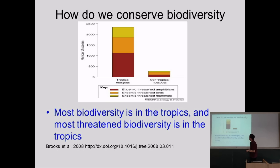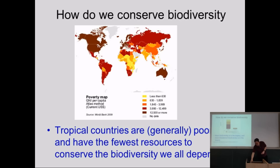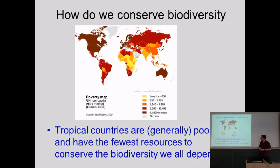Most biodiversity is in the tropics, and most threatened biodiversity is in the tropics. This is a problem because tropical countries are generally poor and have the fewest resources to conserve the biodiversity we all depend on. So how do we conserve biodiversity?